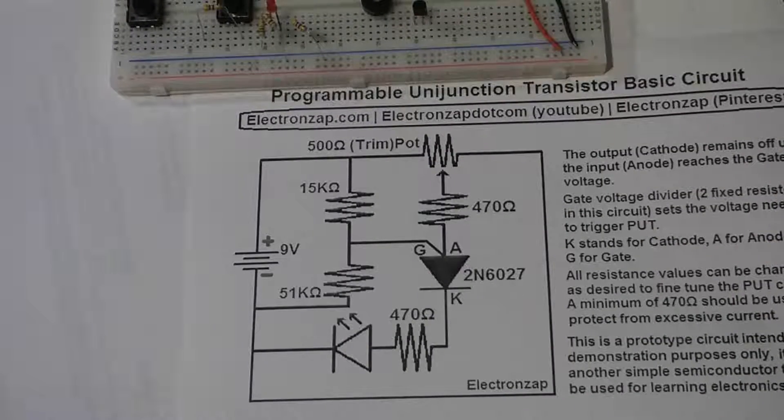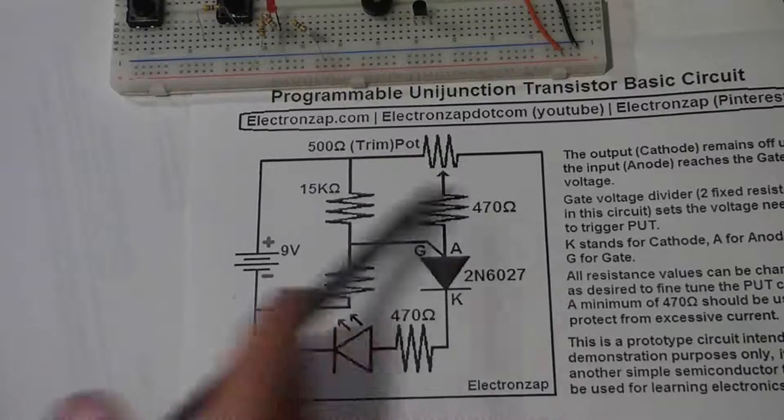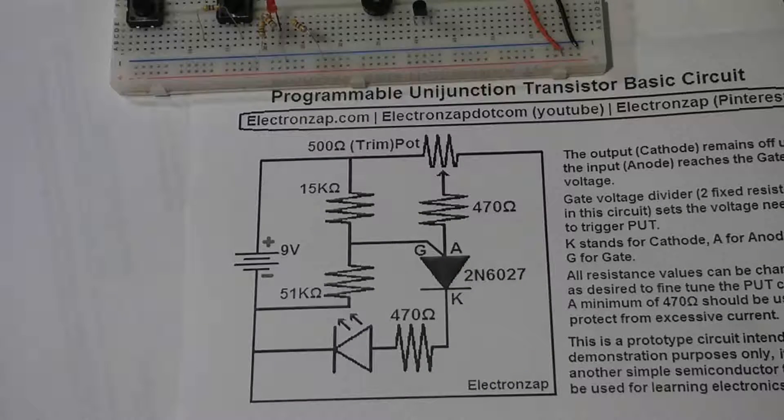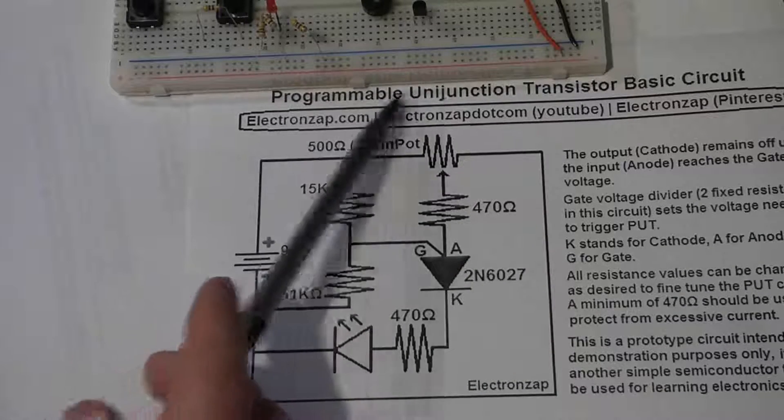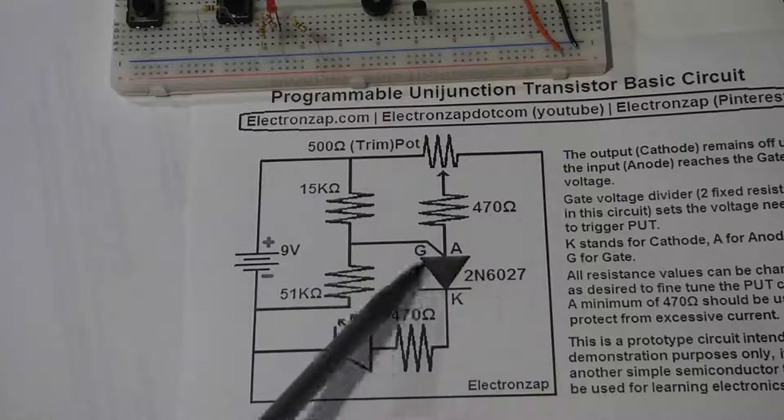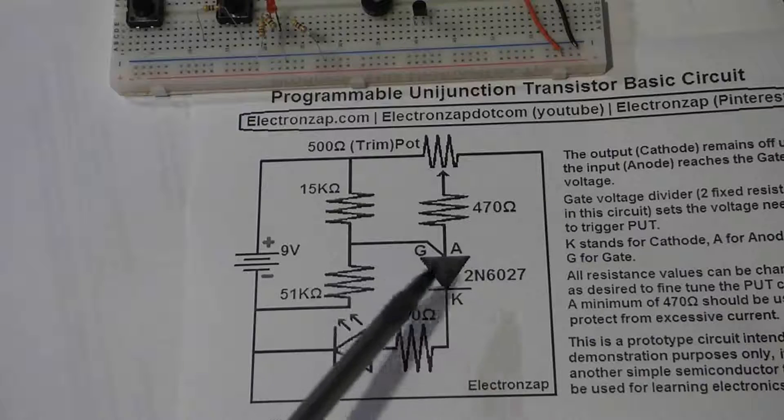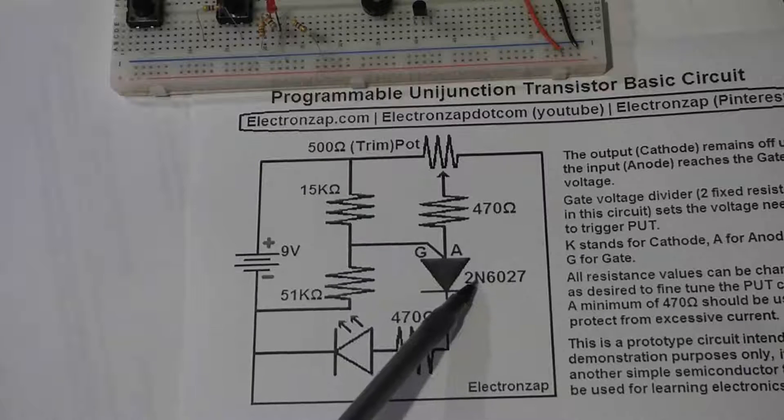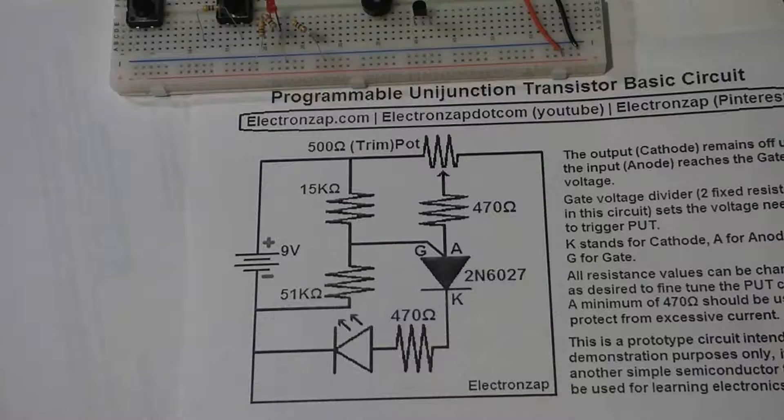In this video, we're going to put together this circuit. I'm going to do a step-by-step build. This circuit has a programmable unijunction transistor, which is this symbol here, and the part number is 2N6027.